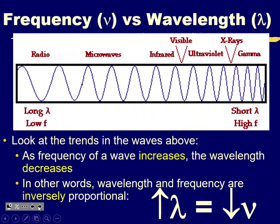As the frequency of a wave increases, the wavelength decreases — an inversely proportional relationship. As the wavelength goes up, the frequency goes down and vice versa. Frequency is also directly related to energy: if frequency goes up, energy goes up. Therefore, energy is inversely proportional to wavelength — the longer the wavelength, the lower the energy.